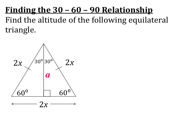We know that an equilateral triangle has three congruent sides, so on this triangle all three sides are 2x, and we also know that all the angles of an equilateral triangle are 60 degrees.